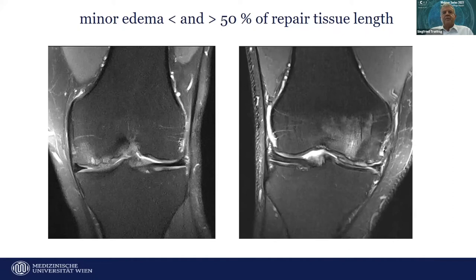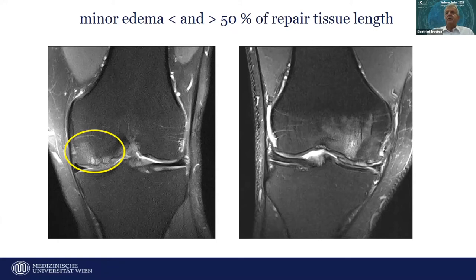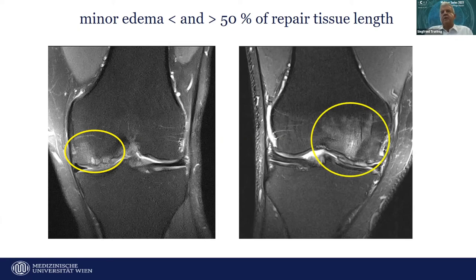Examples of subchondral changes: on the left, a minor edema less than 50% of repair tissue length. On the right, a major edema more than 50% of repair tissue length.